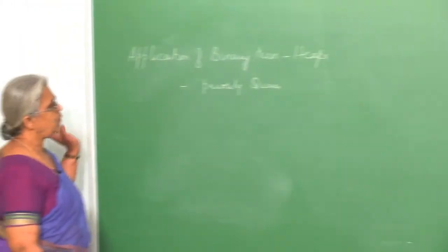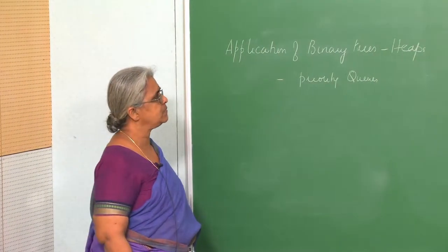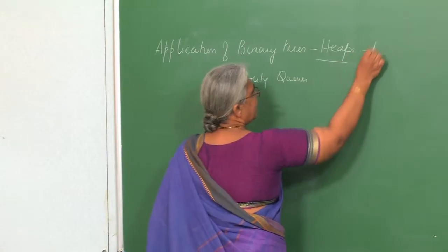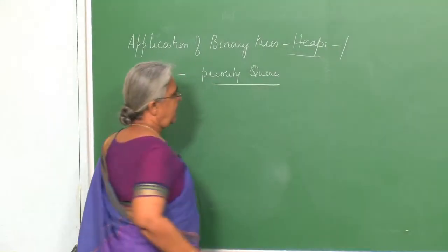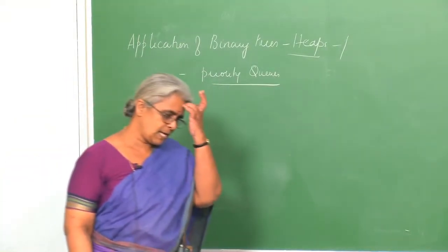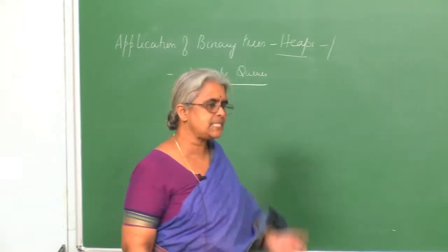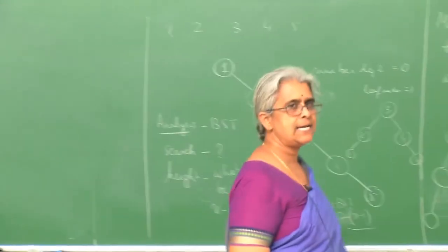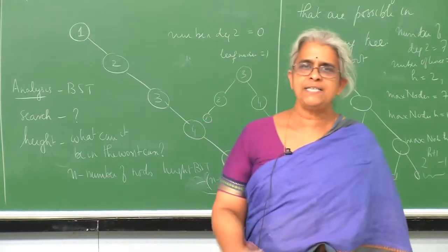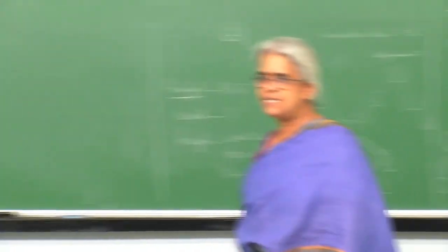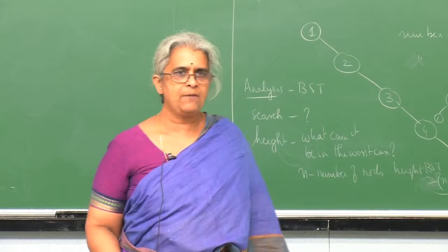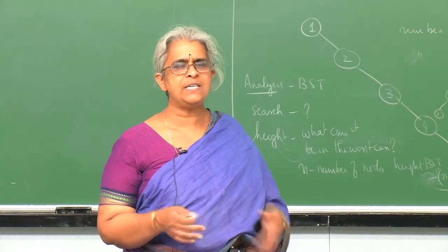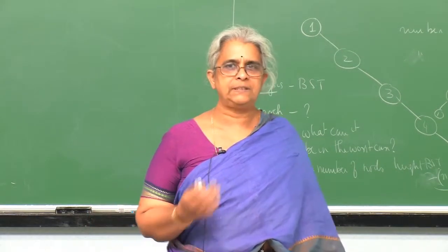Now I am going to give you one more application of binary trees which is very important, called heaps or priority queues. In the first few classes when we did lists, we talked about a queue as a special type of list where insertions happen at one end and deletions happen at the other end. It was a first-in first-out queue — you got into the queue first, you got served first.